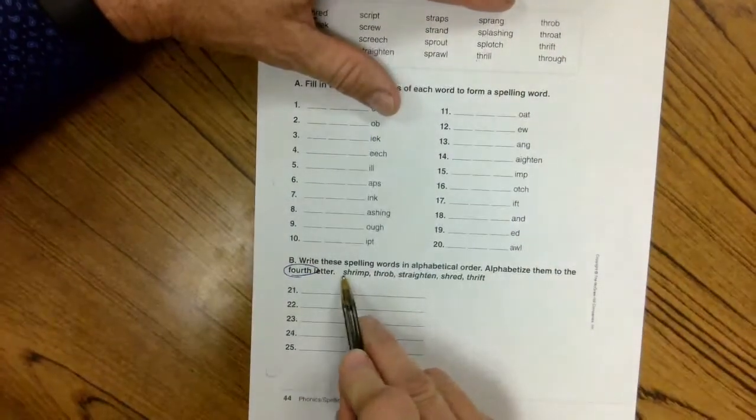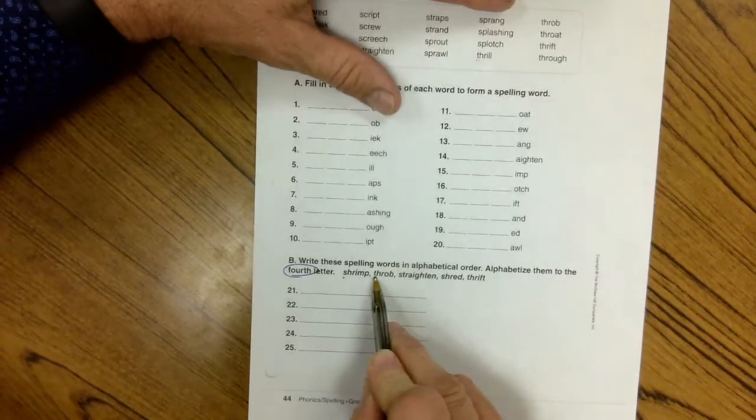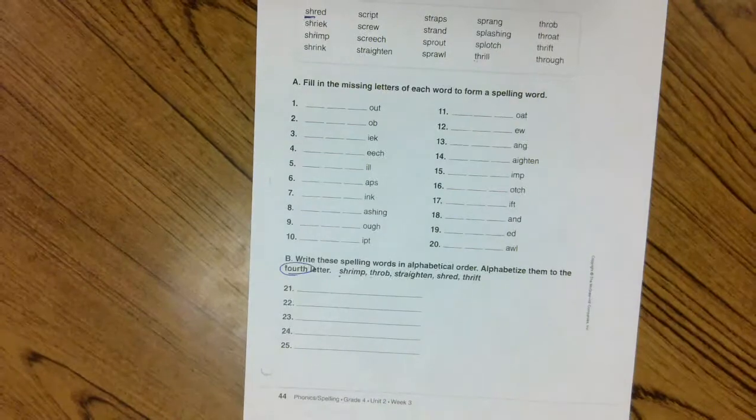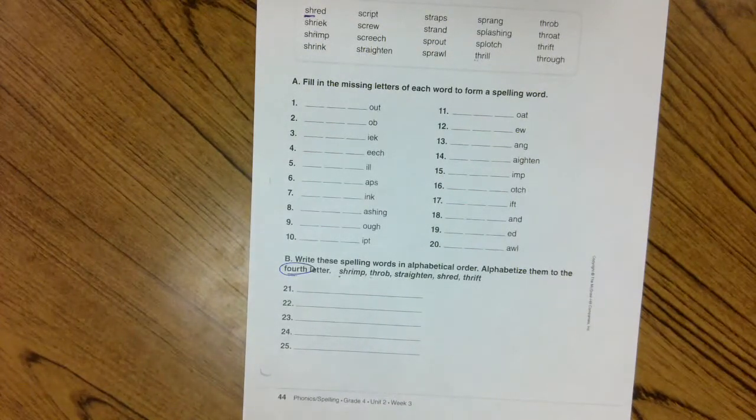So for example, this one's got an S and this one's got a T. Obviously, one's going to come before the other. A, B, C, D, E, F, G, H, I, J, K, L, M, N, O, P, Q, R, S, T.